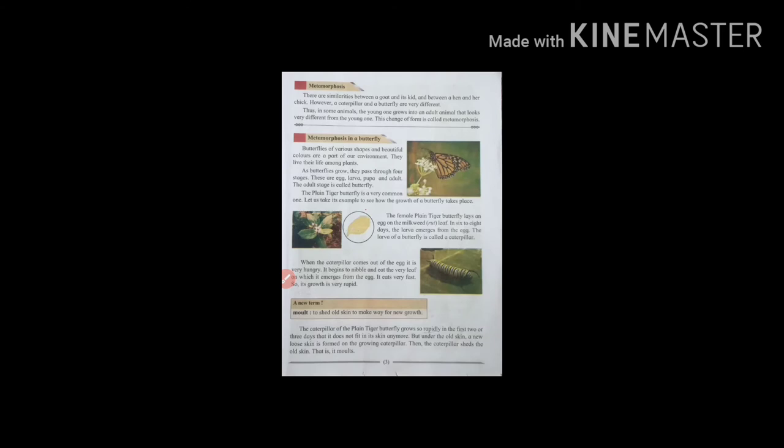As the caterpillar grows, it has to molt. Molt means to shed old skin to make way for new growth. The caterpillar of the plain tiger butterfly grows so rapidly in the first two to three days that it does not fit in its skin anymore. But under the old skin, a new loose skin has formed. Then the caterpillar sheds the old skin, that is, it molts.